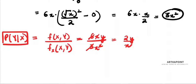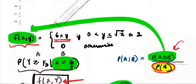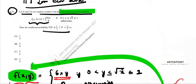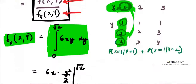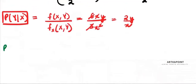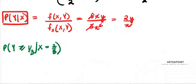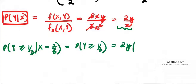Now let's plug in the actual question. We want the probability that Y ≥ 1/3 given X = 2/3. Since x is given as 2/3, I substitute into the conditional PDF: 2y divided by (2/3), which simplifies to 3y. So the conditional PDF with x = 2/3 becomes 3y.